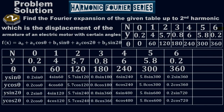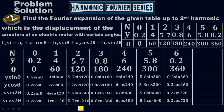Similarly, these are the values for y·cos(2θ). For the first point: 0.2 × cos(0°). For the second: 4 × cos(120°). For the third: 5.7 × cos(240°). For the fourth: 0.8 × cos(360°). For the fifth: 6 × cos(480°). For the sixth: 5.8 × cos(600°). For the seventh: 0.2 × cos(720°).